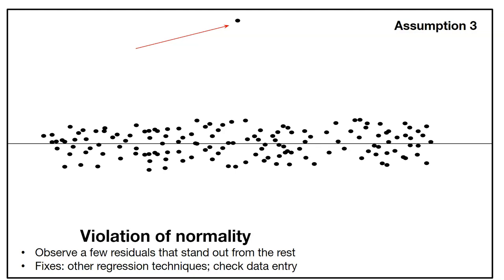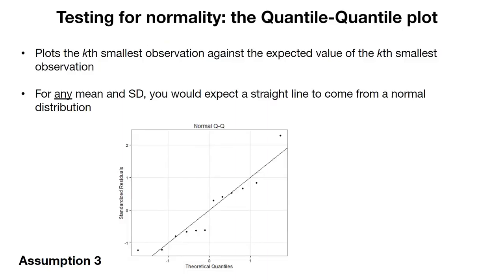A good plot to see data points like this is the QQ plot. The QQ plot is a great way to test for normality. They plot the kth smallest observation against the expected value of the kth smallest observation. For any mean and standard deviation, you'd expect a straight line to form if the data were distributed normally—that is, a straight line from the bottom left to the top right. If it is straight, we're confident we don't have a serious violation of the normality assumption, and we're pretty confident in the results we obtain.